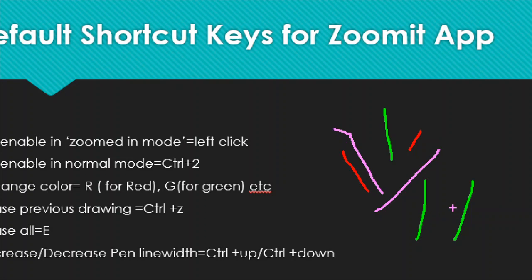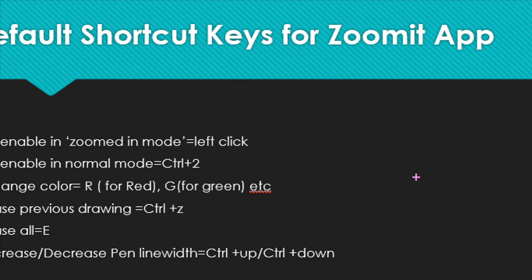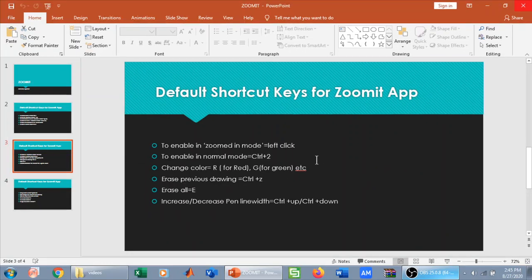To undo the previous drawing or annotation, press Ctrl+C. To erase all drawings at once, press E — all lines will be deleted. You can also change colors and erase in normal mode the same way. To delete all annotations press E.